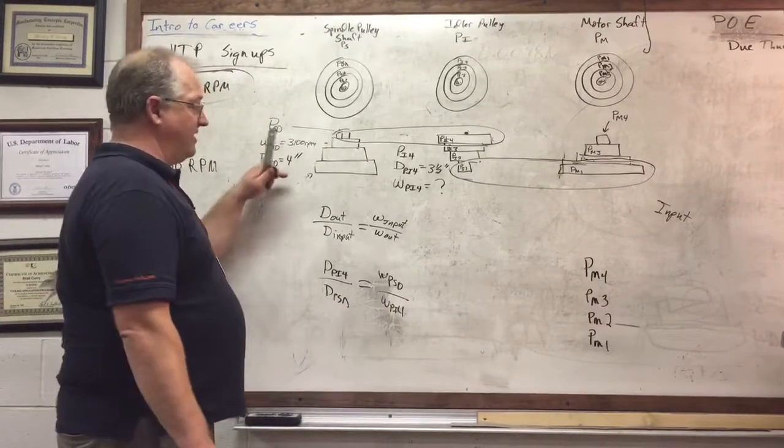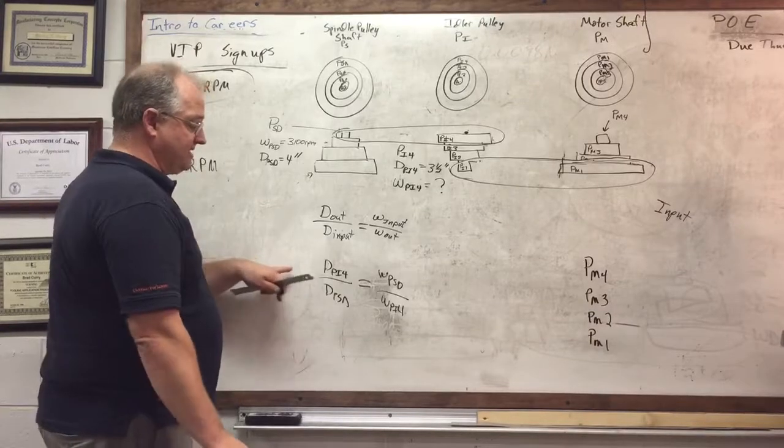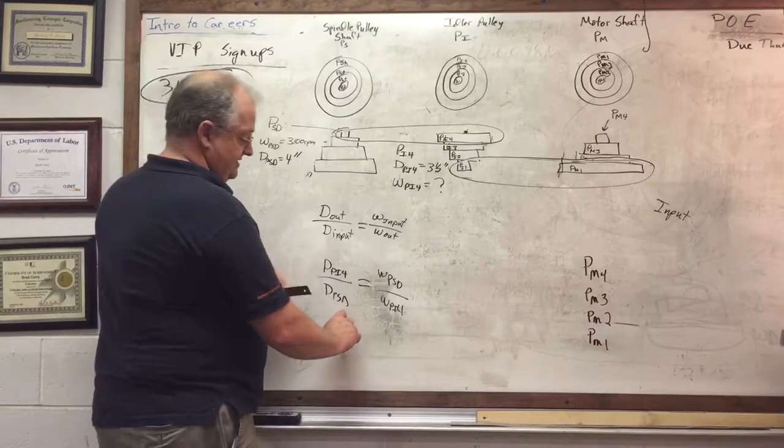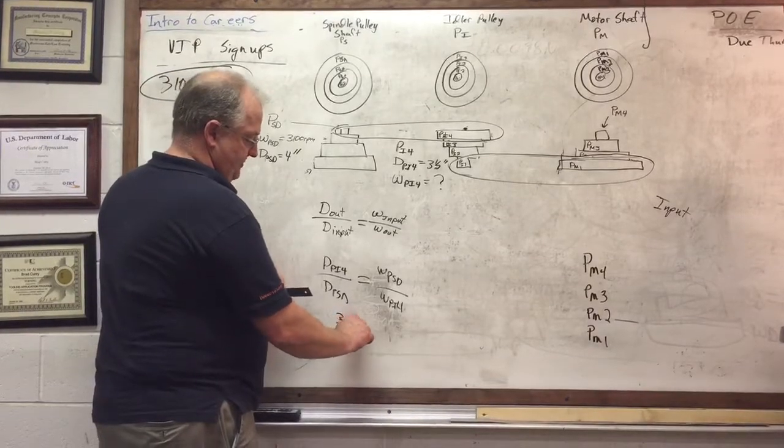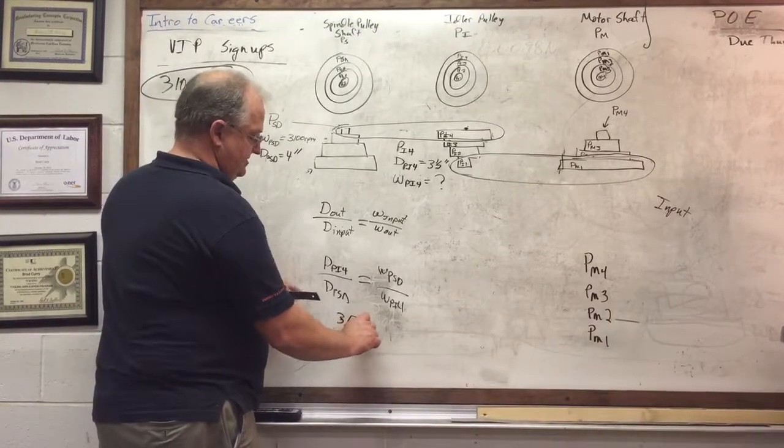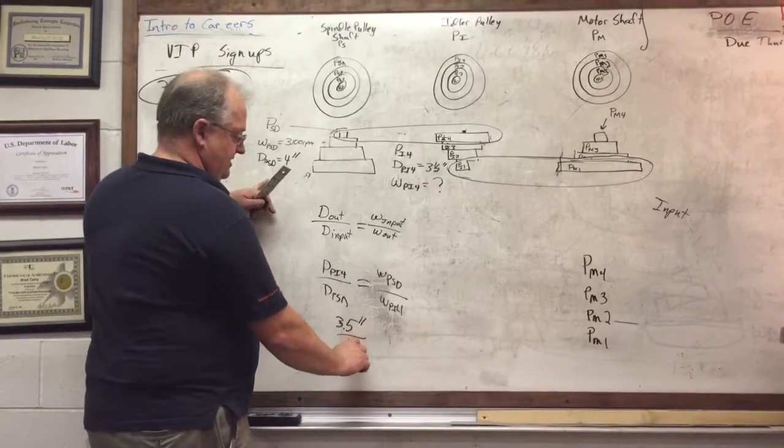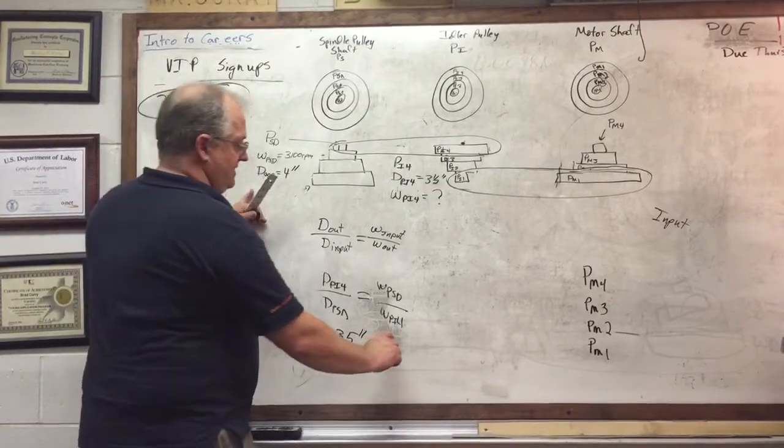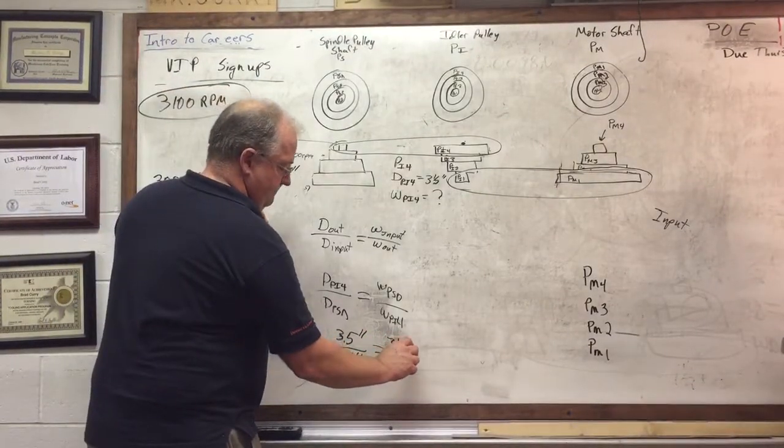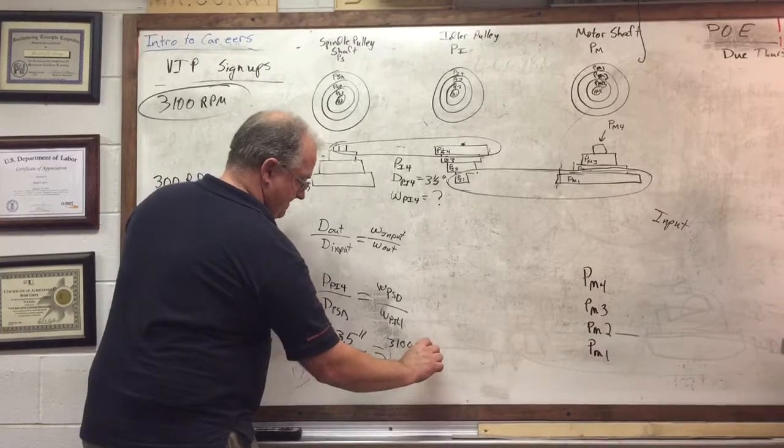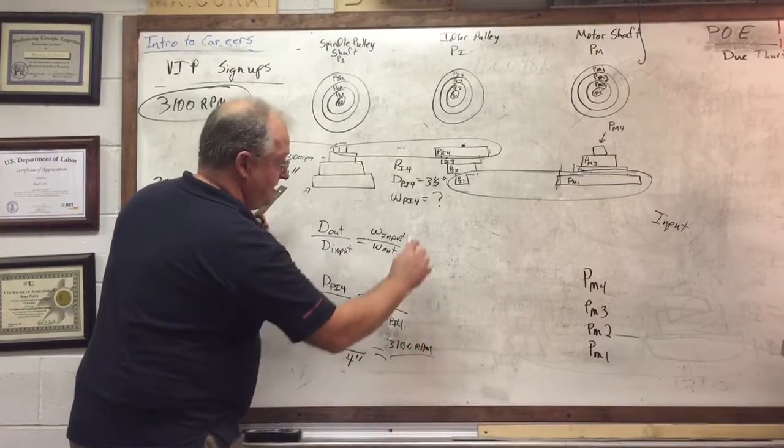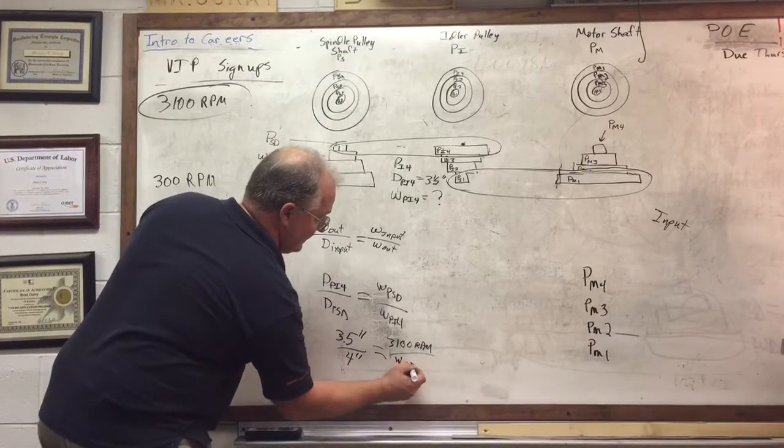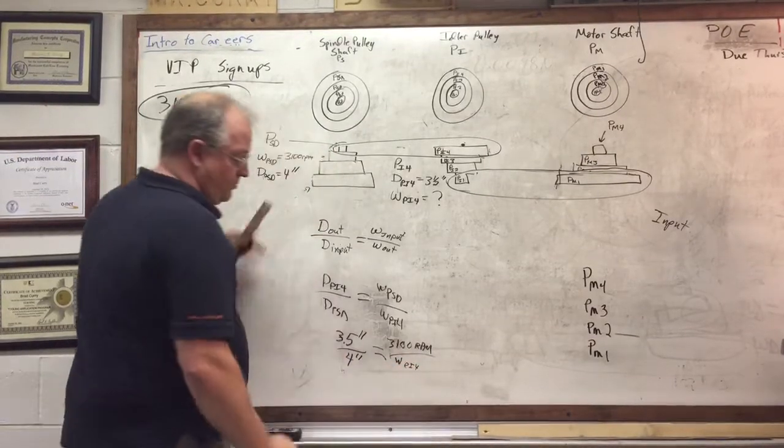Once we have that and know which variable we're solving for, we can substitute. So pi4 diameter here is 3.5 inches over psd, which is 4 inches, equals psd of 3100 rpm over w of pi4. That's what we're solving for.